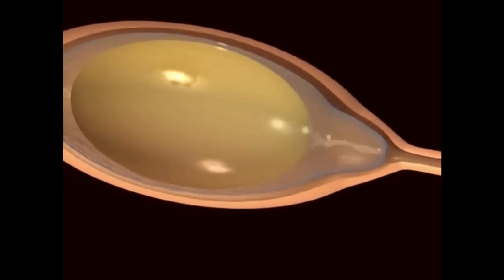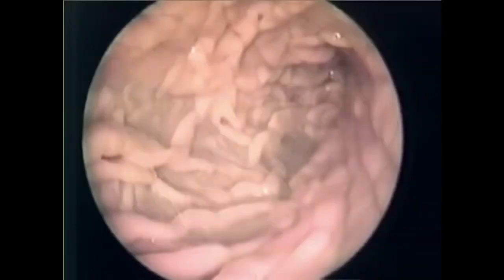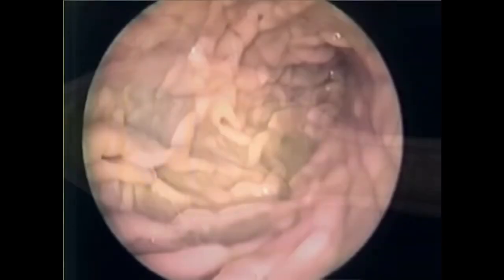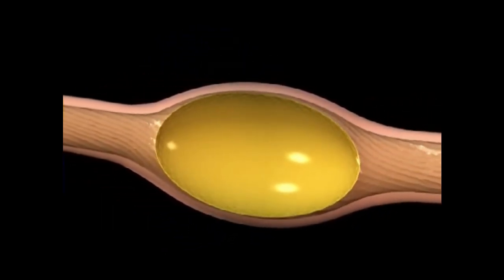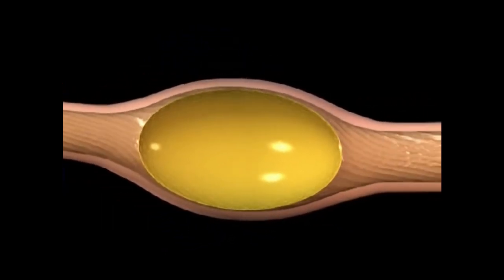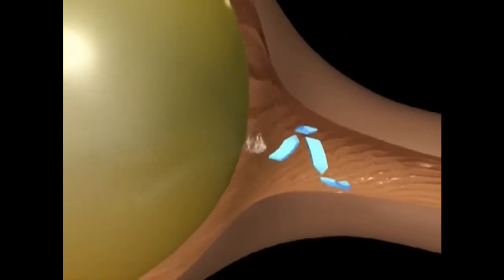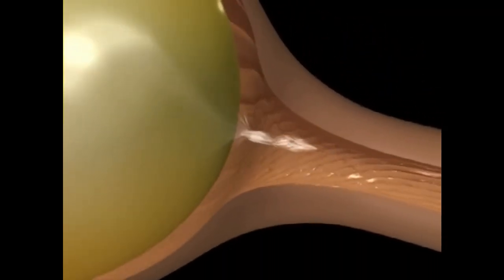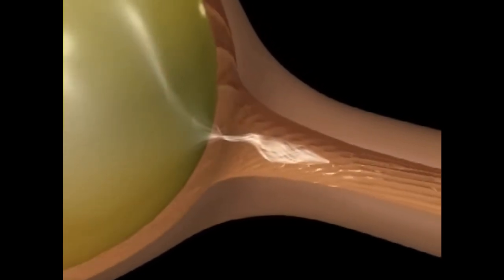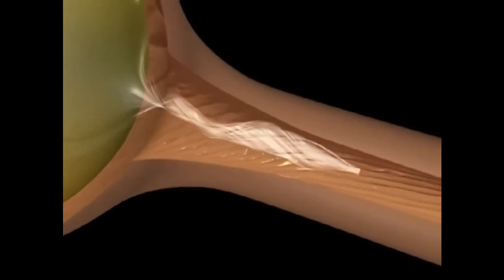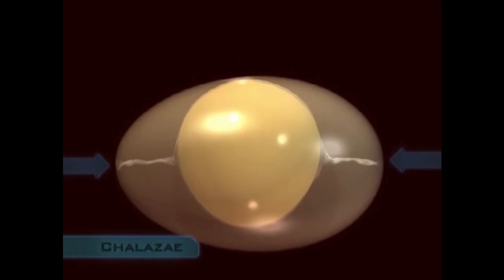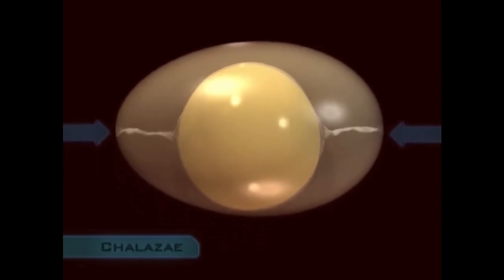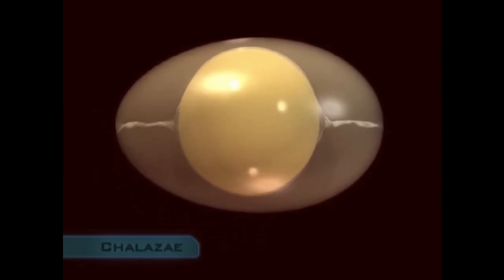As the albumin forms around the yolk, spiral ridges, which run the length of the magnum, cause the yolk to spin like a bullet in a rifle barrel. This spinning twists the protein fibers in the albumin, just in front of, and just behind the yolk, and makes two pigtail-like structures, called the chalaza. The chalaza keep the yolk suspended in the center of the albumin, and ultimately prevent it from moving around inside the egg.